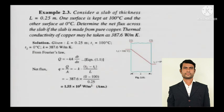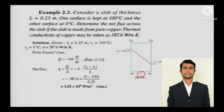The next problem: consider a slab of thickness L = 0.25 meters. This is talking about thickness. One surface is kept at 100 degree Celsius and the other surface at 0 degree Celsius. Determine the net flux across the slab if the slab is made of pure copper. The thermal conductivity of copper may be taken as 387.6 watts per meter Kelvin.